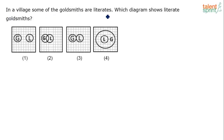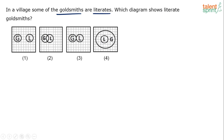In a village, some of the goldsmiths are literates. Which diagram shows literate goldsmiths? Goldsmith is a profession, and one can either be literate or illiterate. So the statement is: some goldsmiths are literates — in other words, some A's are B's.